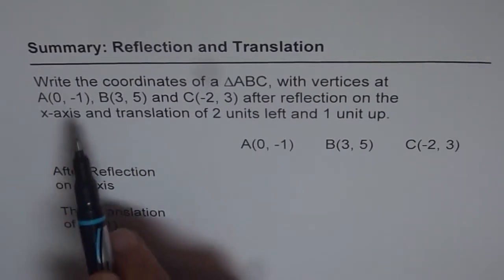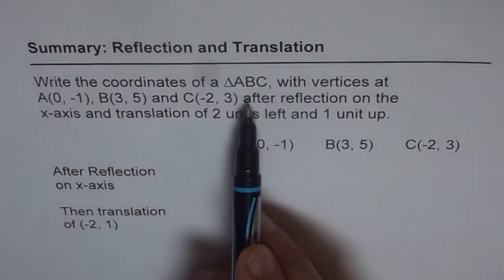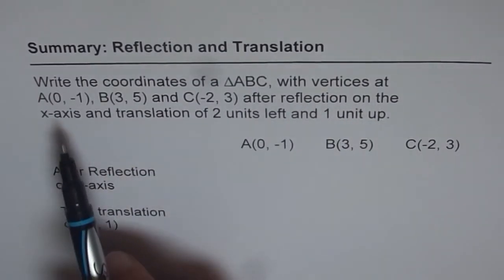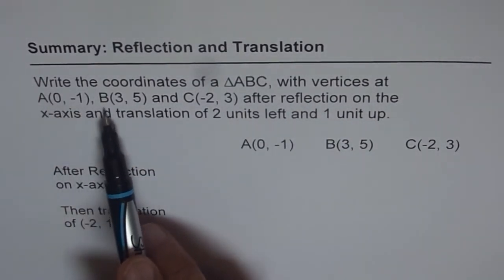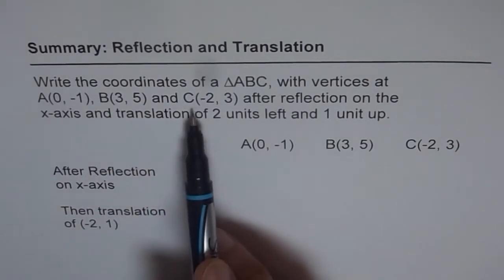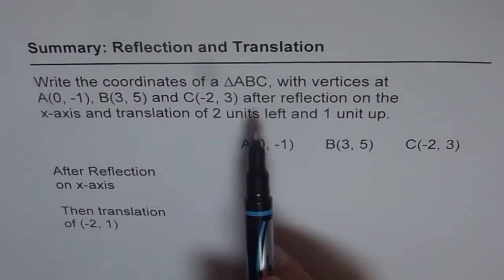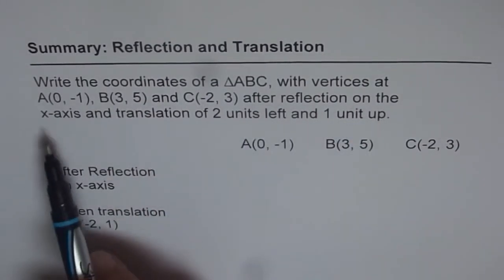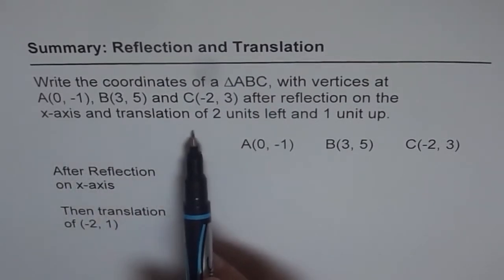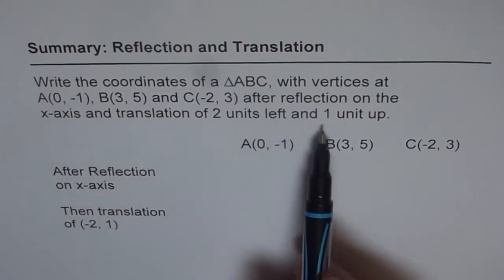The question is, write the coordinates of a triangle ABC with vertices at A(0, -1), B(3, 5), and C(-2, 3), after reflection on the x-axis and translation of 2 units left and 1 unit up.